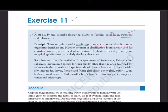Bentham and Hooker's system of classification is universally used for plants. Field identification is based primarily on morphological features - that's why the chapter is called Morphology of Flowering Plants. When we talk of morphology, floral characters are invariably involved.